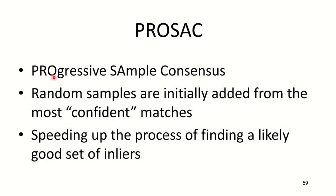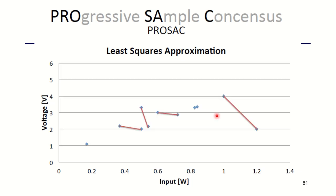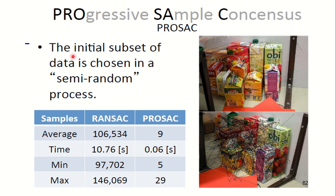PROSAC: It is an abbreviation of Progressive Sample Consensus, where random samples are initially drawn from the most confident matches. It speeds up the process of finding a likely good set of inliers. These are the graphs for the PROSAC method. This is your least squares approximation. With the data points you find different distances between the data points and the squares of it. The initial subset of data is chosen in a semi-random process. The comparison of RANSAC and PROSAC: average number of samples used, then time elapsed for the two techniques, and minimum and maximum values for RANSAC and PROSAC have been given.